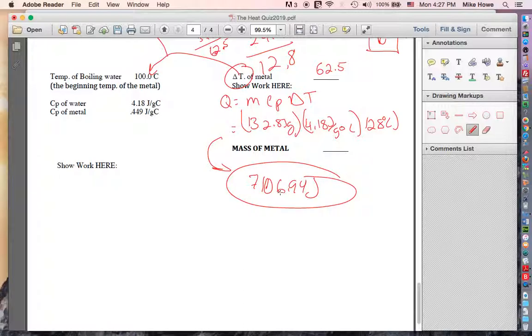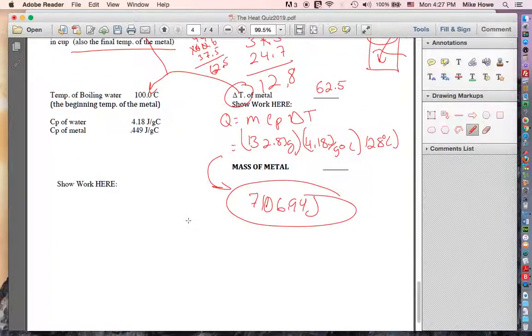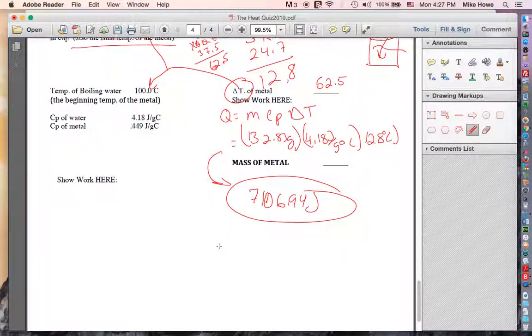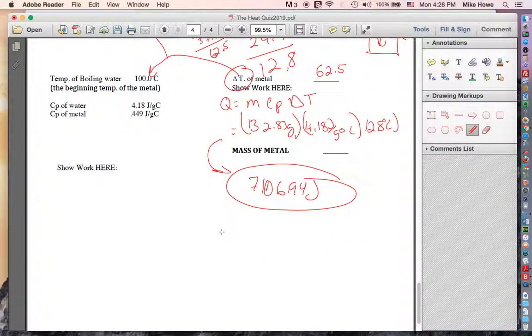Okay, that's the heat change of the water. But we don't want to know that. We want to know the mass of the metal. Did the metal change temperatures? Yes, it started at 100, went down to 37 and a half. So the metal changed temperatures, too. If it changed temperatures, then we can use the same formula. So we'll say Q equals M, C, P, and delta T.